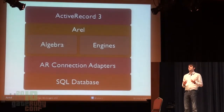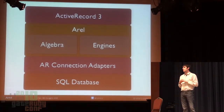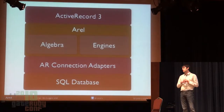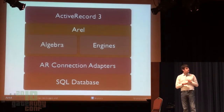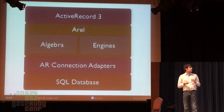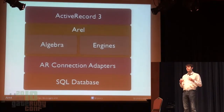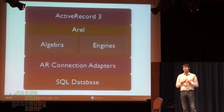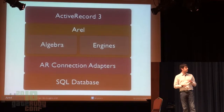How does AREL integrate with Active Record 3? This is a high-level architecture diagram. Active Record 3 sits on top — the interfaces you know and love, which are an evolution of the Rails 2 interfaces. Below that you've got Active Relation, split into two components: the algebra, which implements a relational algebra engine, and the engines, which allow you to execute those relational concepts against the database. Finally, you need a connection adapter to talk to MySQL or Postgres. We're still using the AR connection adapters, largely unchanged from Rails 2, sitting on top of the database.